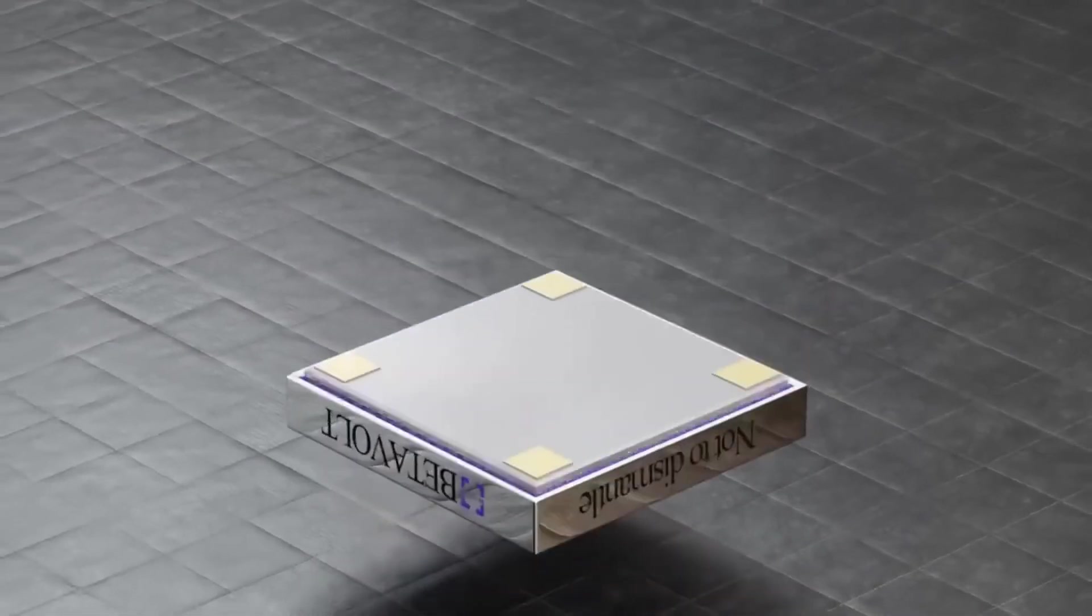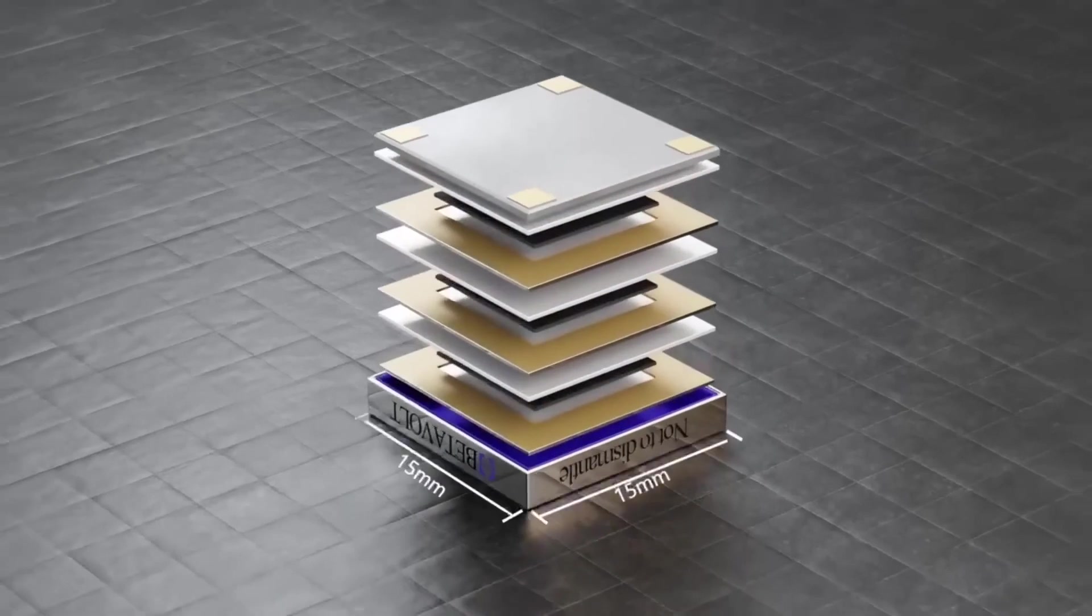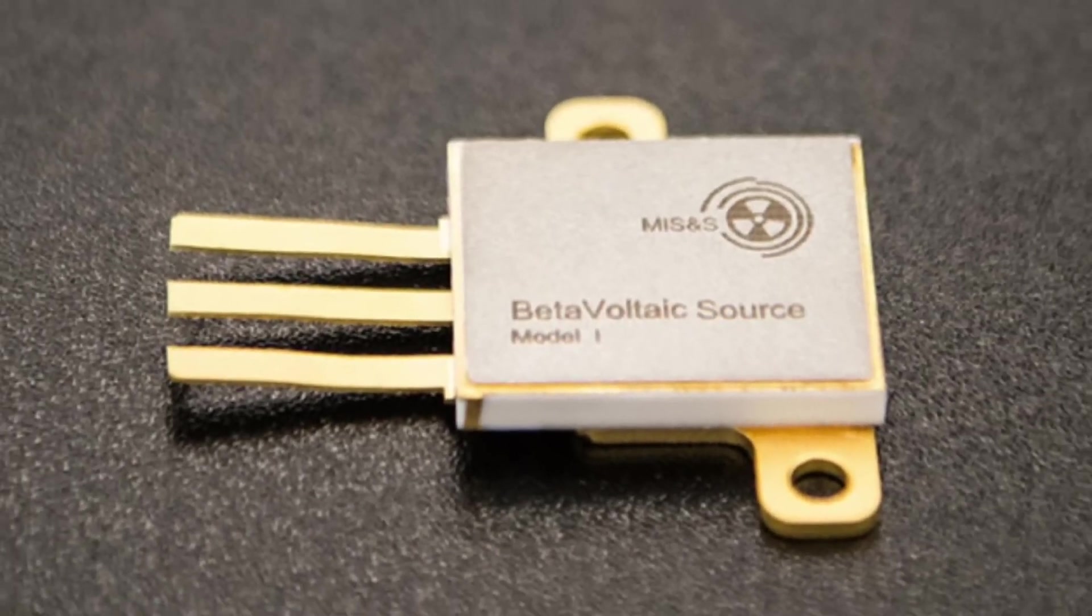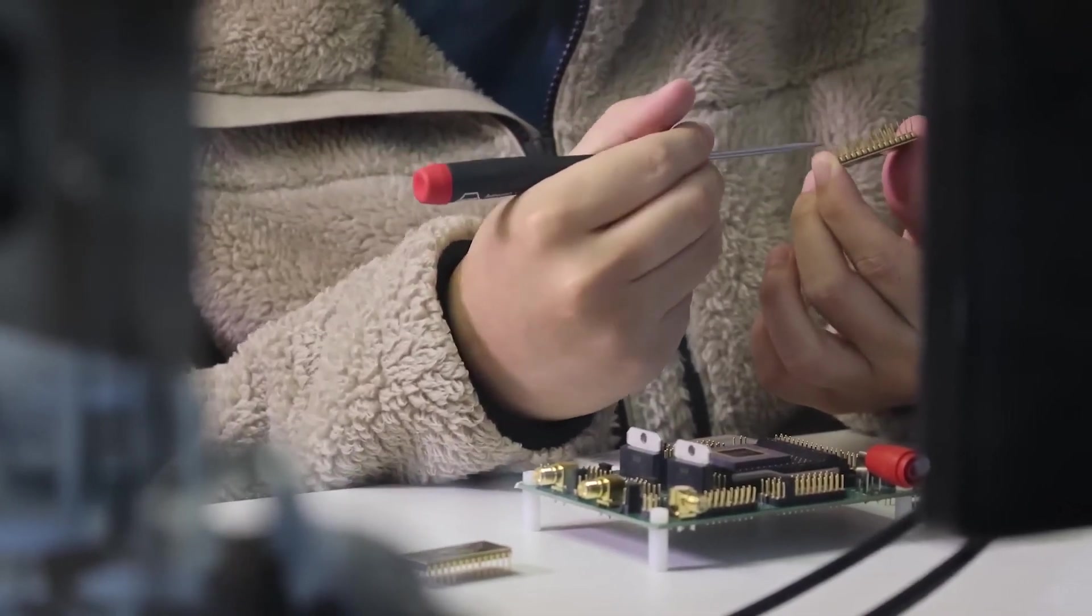We mentioned that the key drawback of such batteries, scientifically referred to as beta-voltaic elements, is their very low power output, typically measured in thousandths of a watt at best.